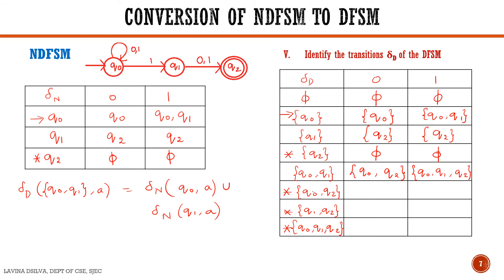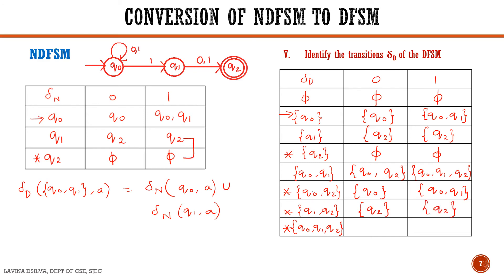Next, considering state {Q0, Q2}: on input 0 it goes to Q0, and on input 1 it goes to {Q0, Q1}. Next is state {Q1, Q2}: on receiving a 0 it goes to Q2, and on receiving a 1 it also goes to Q2. Finally, for state {Q0, Q1, Q2} — the three states together — on input 0 it goes to {Q0, Q2}, and on input 1 it goes to {Q0, Q1, Q2}.